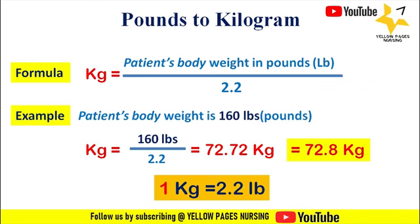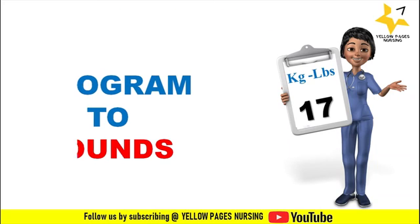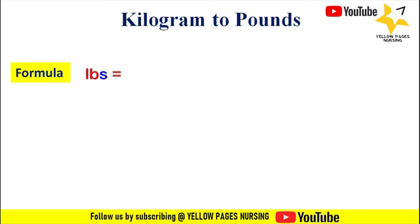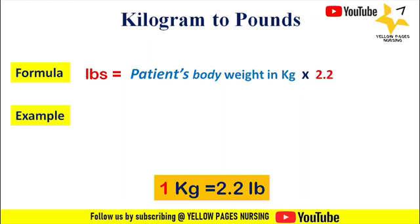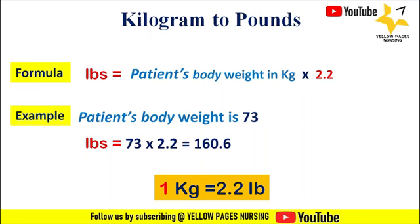Next comes conversion from kilograms to pounds. To convert kilograms to pounds, multiply the patient's body weight in kilograms by 2.2. The formula is: lb = kilogram × 2.2. Remember, 1 kilogram equals 2.2 lb. For example, a patient's weight is 73 kg. So pounds = 73 × 2.2 = 160.6, and hence the patient's weight will be approximately 161 pounds.